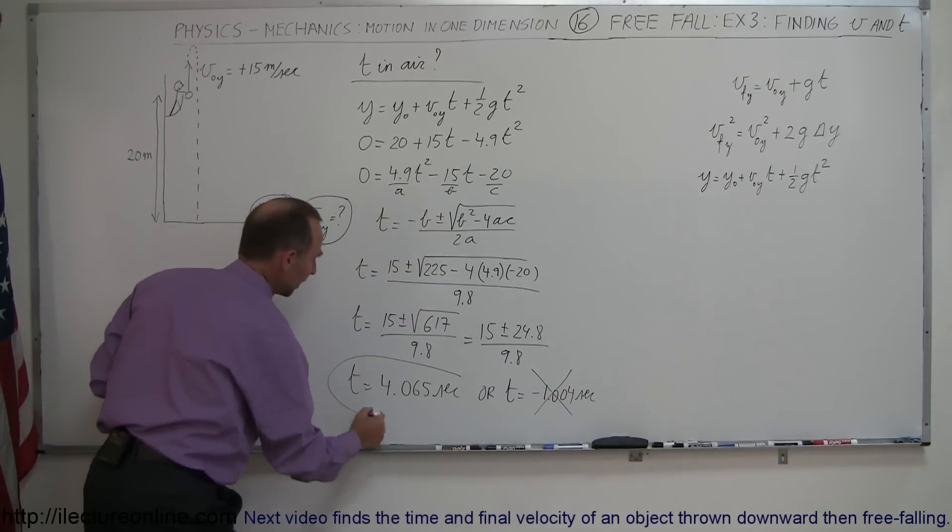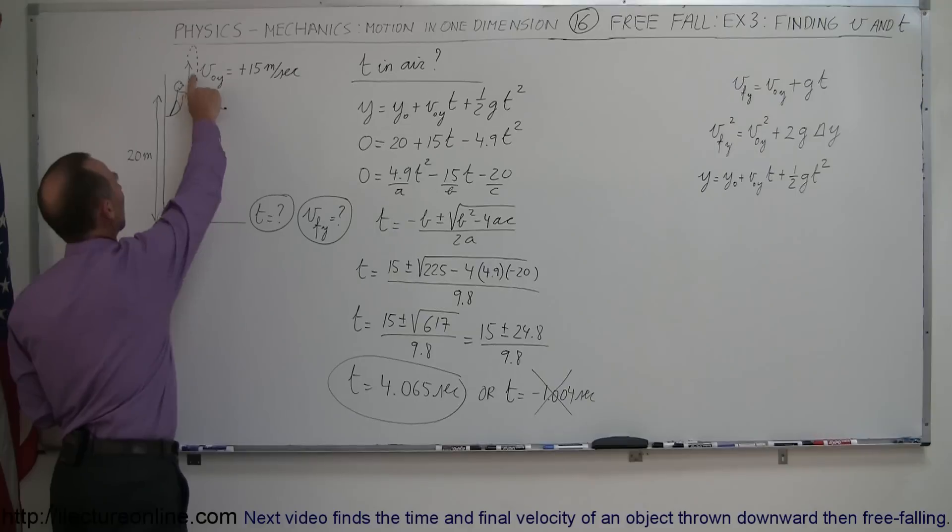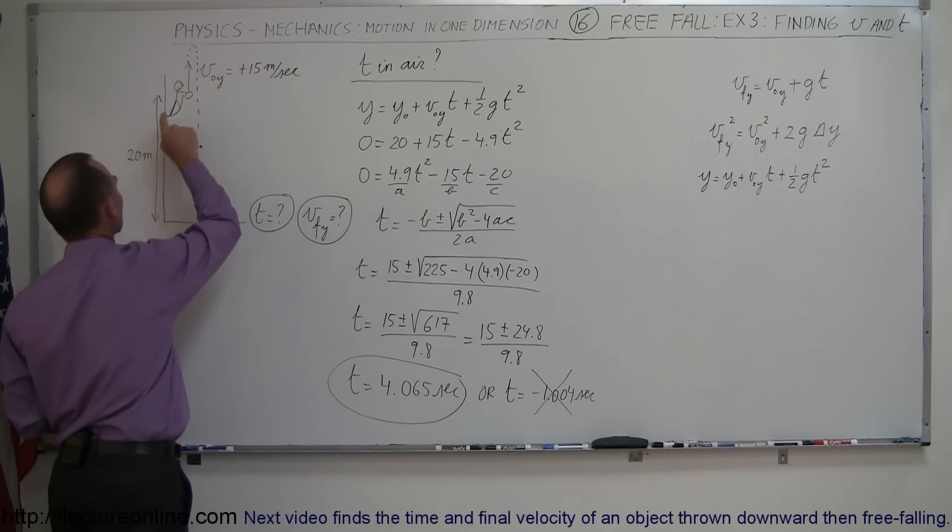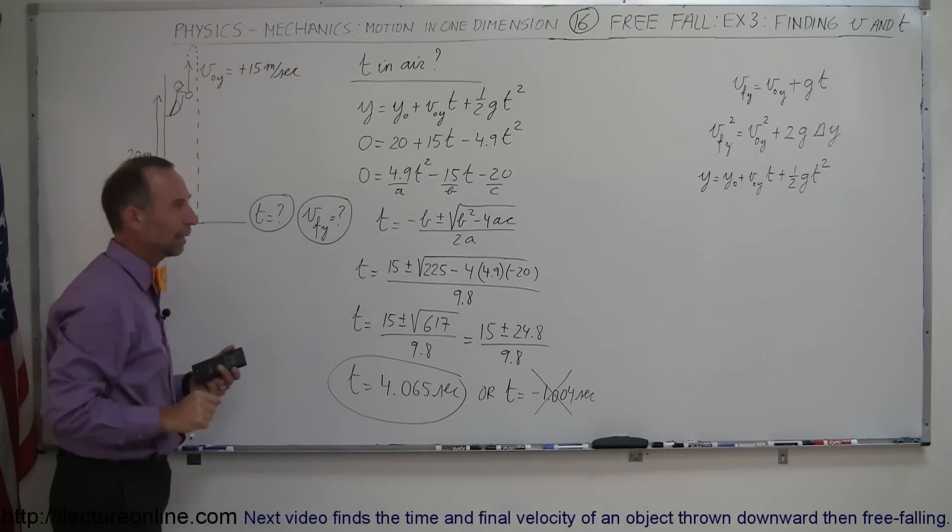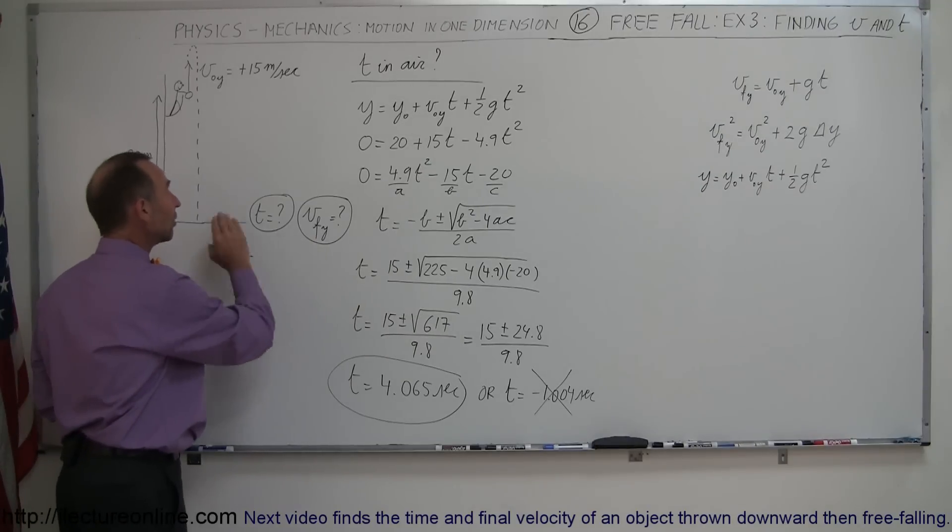So this is the correct answer then. So it'll take 4.065 seconds after throwing it upward at 15 meters per second from a height of 20 meters before it comes and hits the ground again. So the second question is, what will be the final velocity when it hits the ground?